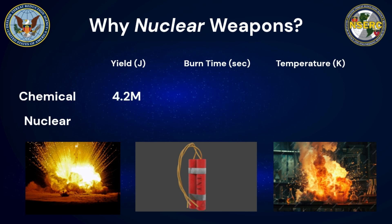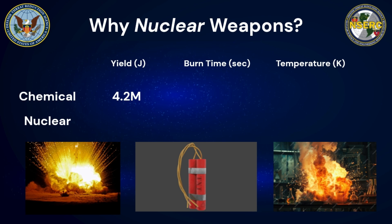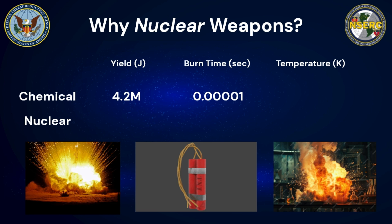Considering it only takes around 400 joules to break a human bone, that's a significant amount of energy released from just one kilogram of material. Additionally, in terms of the chemical reaction time span, one kilogram of TNT typically burns in about 10 microseconds, which is very fast. Part of the reason why chemical explosions are so destructive is they release all that energy in such a short time span.